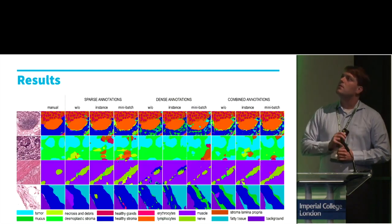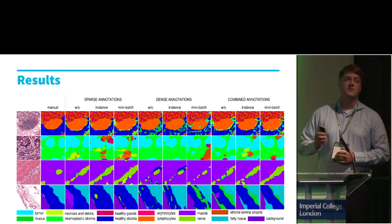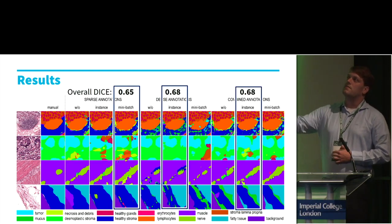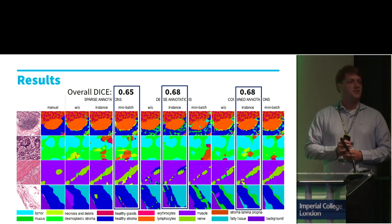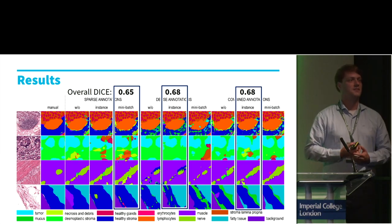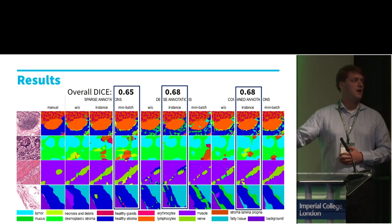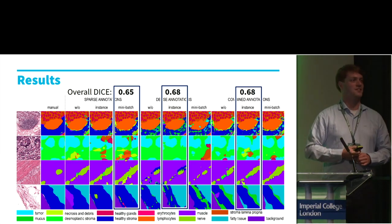Looking at the results, we can see they are quite similar across all methods and annotation types. The overall Dice score is more or less equal across approaches. Coming back to the original question: do we really need labor and time-intensive annotations? I would say yes, we do need labor-intensive annotations, but not as much as one might think. I invite you to the poster for further discussion.